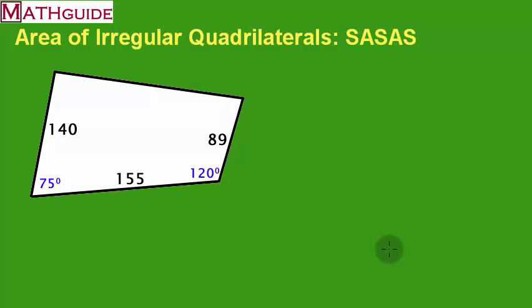Just like our other video where we calculated the area of an irregular quadrilateral given four sides and one angle, there is something similar in our approach. All the formulas in trigonometry deal with triangles, and we have a quadrilateral, so that is definitely a problem. What we're going to do to remedy the situation is create two triangles.